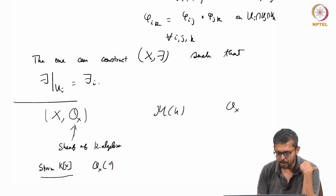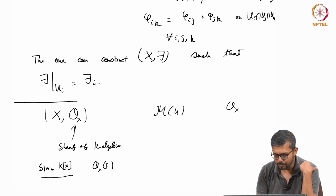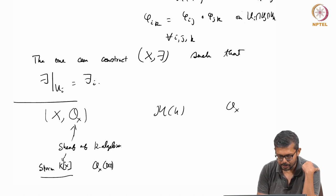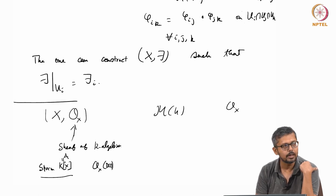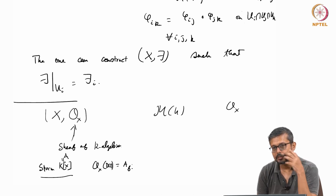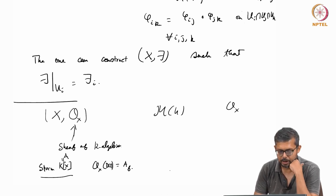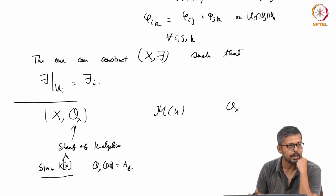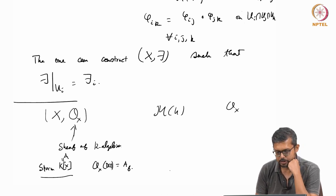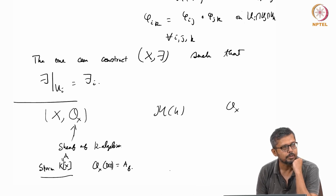The basis consists of basic open sets of the form D(f). If the ring is called A, then OX on D(f) is nothing but A_f, the localization at f. These are the regular functions on A. For example, if A is K[X1, X2, ..., Xn], this is K[X1, X2, ..., Xn] localized at f.